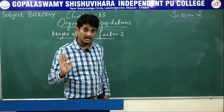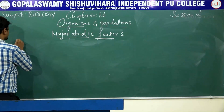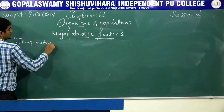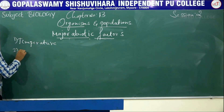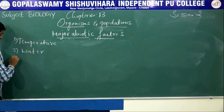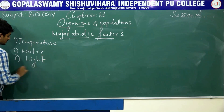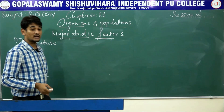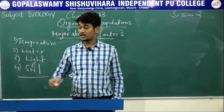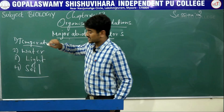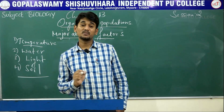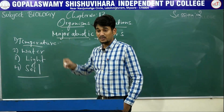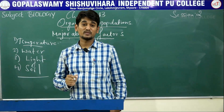There are four major abiotic factors: one is temperature, the second one is water, the third one is light, and the fourth one is soil. Temperature is one of the most important ecologically relevant environmental factors.